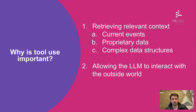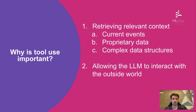Why is tool use important? I think there are a bunch of different reasons. The two main ones are: allowing it to retrieve relevant context — getting information about current events, pulling in information about proprietary data, navigating complex data structures. Tool usage itself can be used to interact with data structures. And then also allowing language models to interact with the outside world — really meaning taking actions, whether it be pushing something to a database or more complex things. Language models are themselves just text in, text out, and hooking them up to different tools can enable a lot of really cool capabilities.